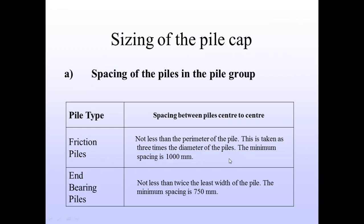In sizing of the pile cap, it is based on pile type — whether the pile is a friction pile or an end bearing pile. For friction piles, the minimum spacing of pile from center to center is 1000 mm. For end bearing piles, the spacing of the piles from center to center is 750 mm.